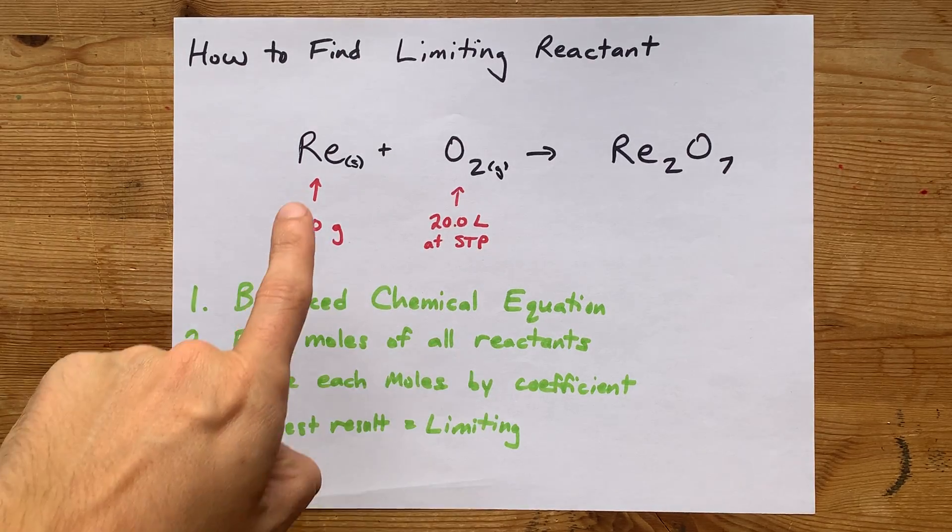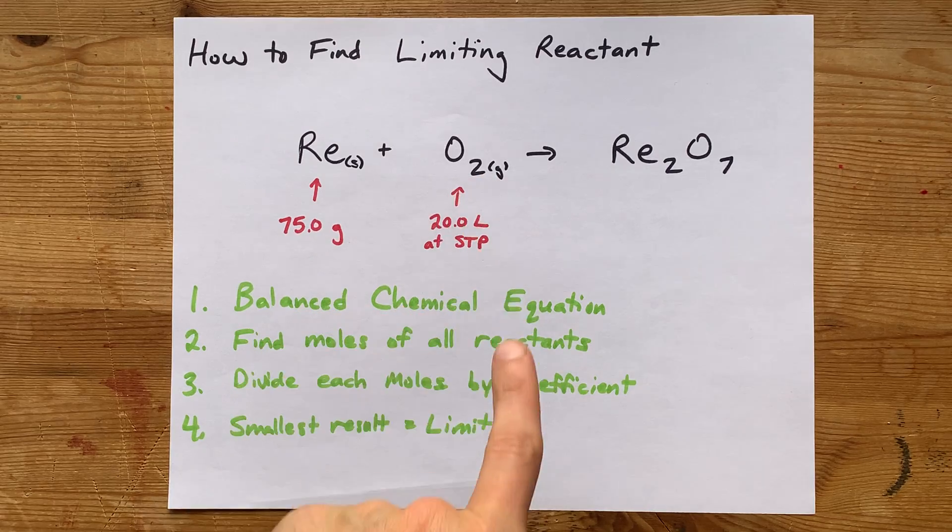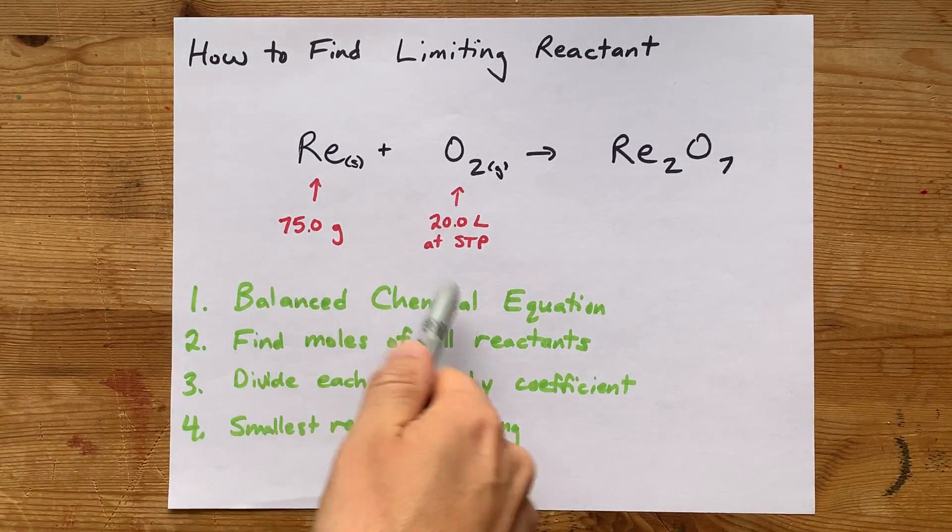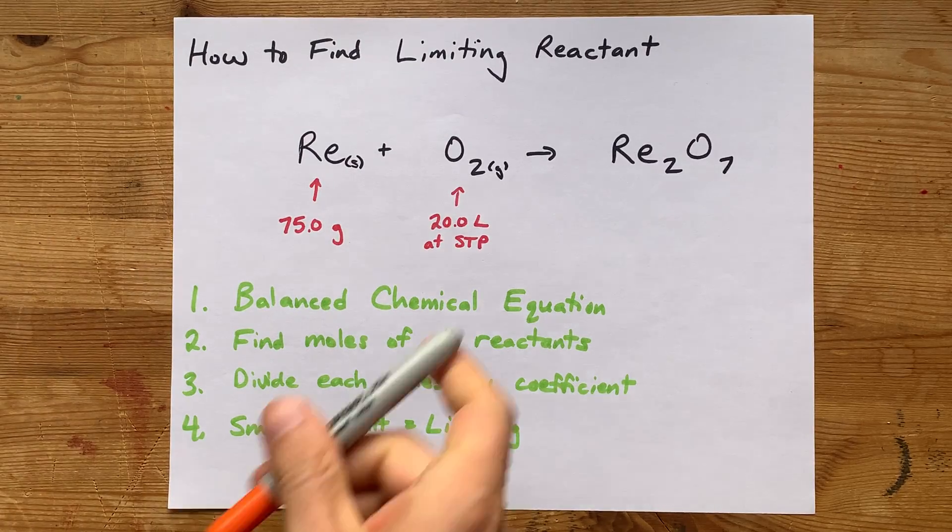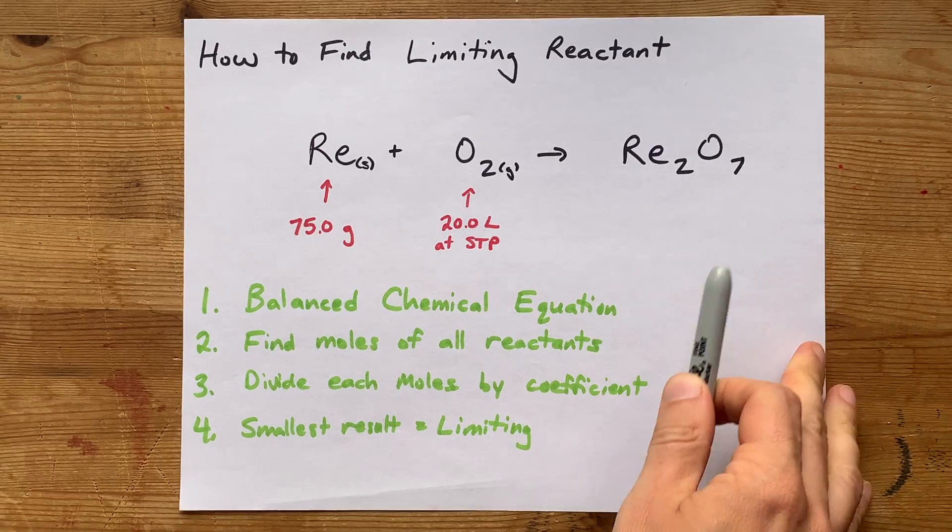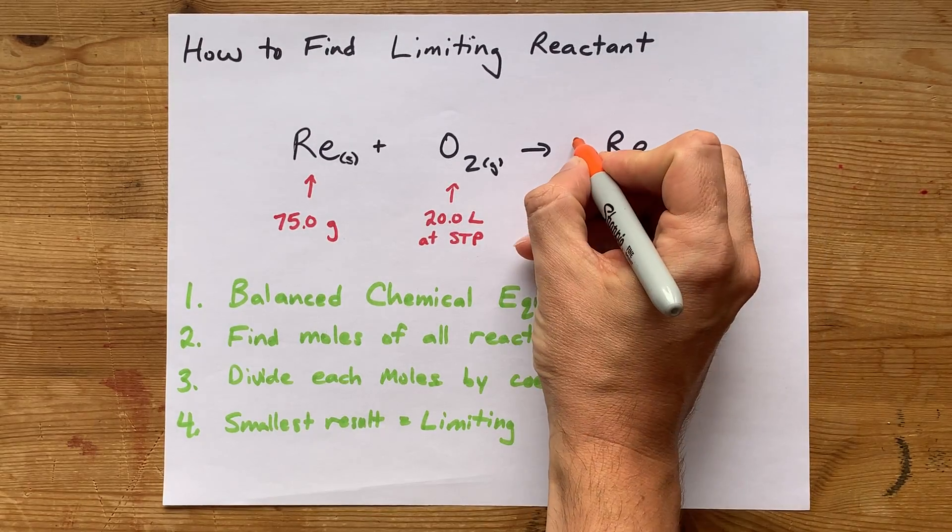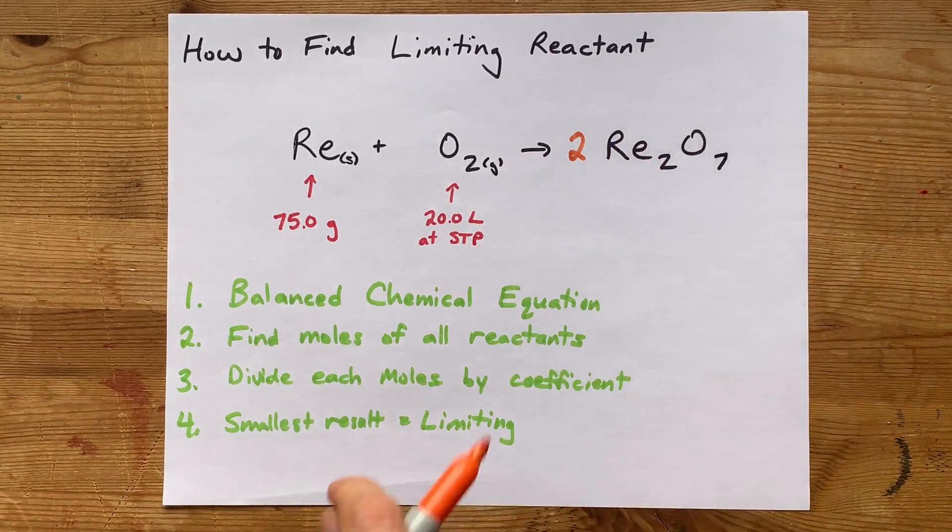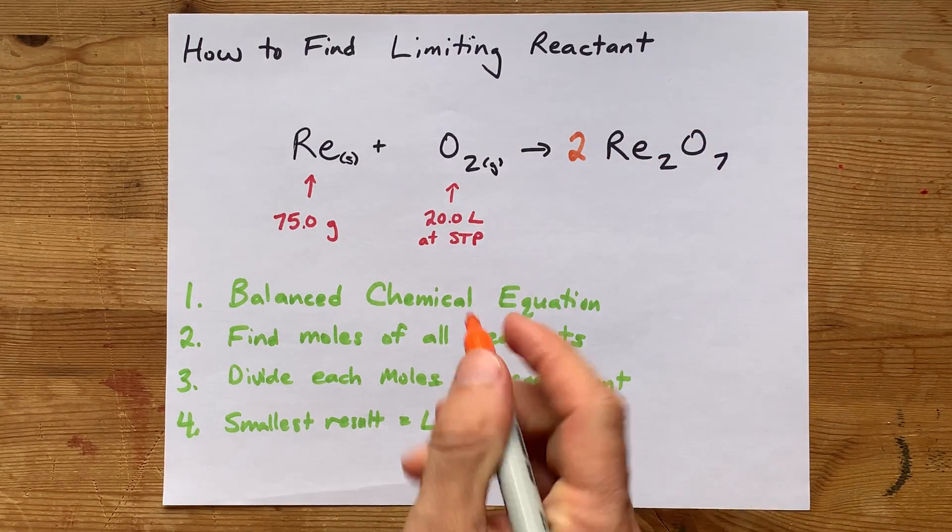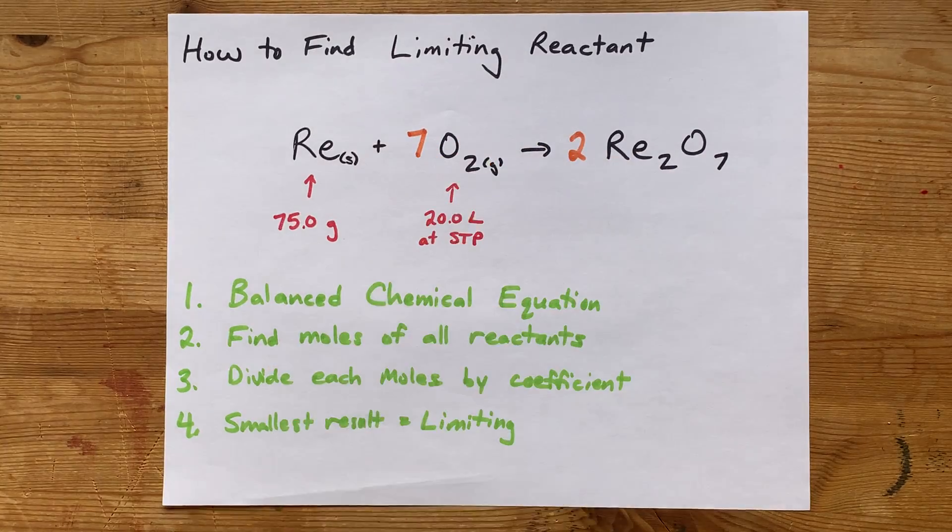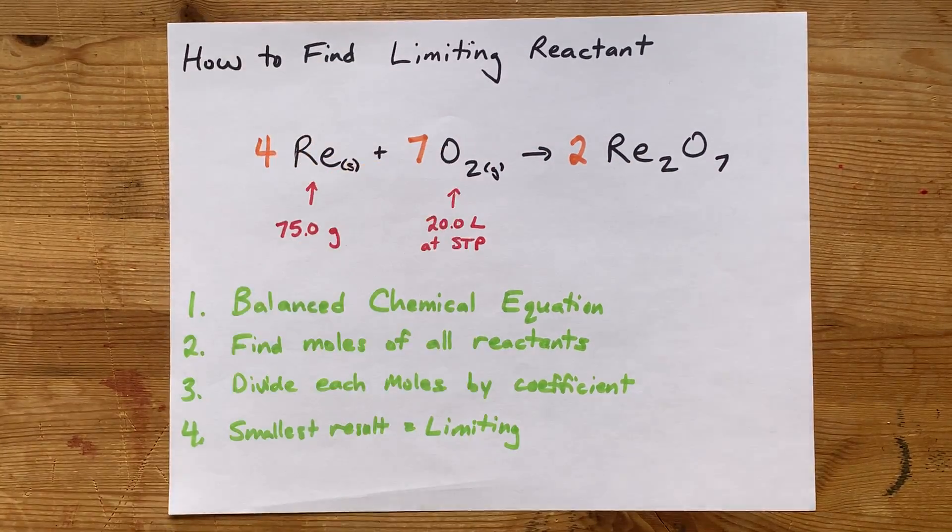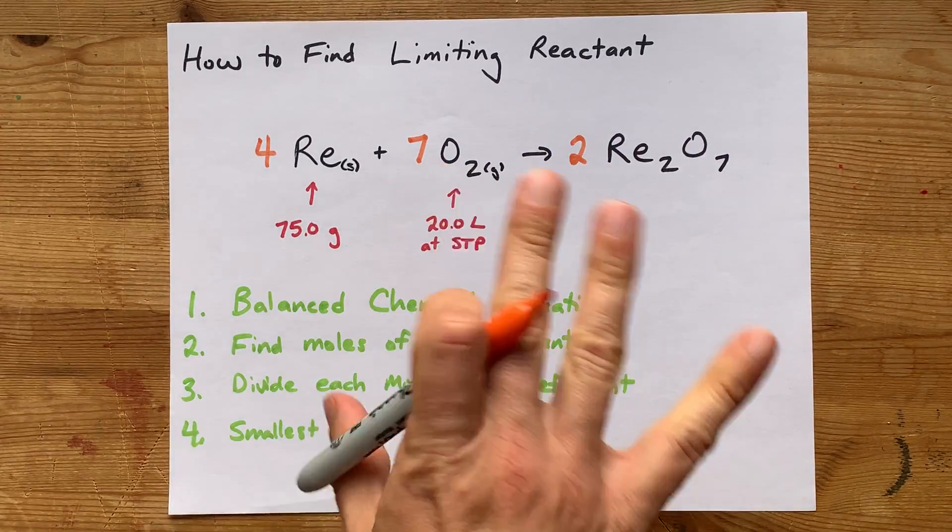We're going to do this for this example here. I've got rhenium reacting with oxygen to form rhenium-7 oxide. Step one, balance the chemical equation. My oxygens come in packages of two, and I need O7 in the end. I need an even number of oxygens, so the coefficient on that is two. That's 14 oxygens total, so I need seven of these molecules. Four rheniums total, so I need four there. Balanced chemical equation.